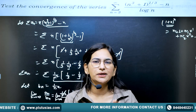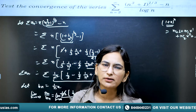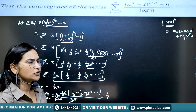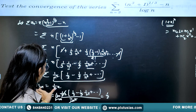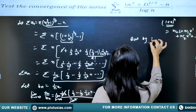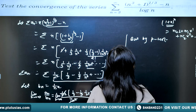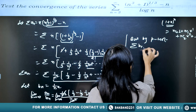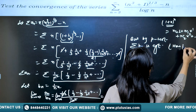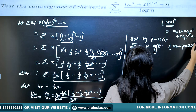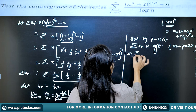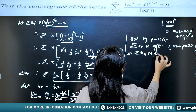Since aₙ and bₙ' (= 1/n²) behave in a similar manner, and by the p-test the series Σ 1/n² is convergent (because p = 2 > 1), this implies our series Σ aₙ is also convergent. So the first condition of Abel's test — that the series Σ aₙ is convergent — has been verified.